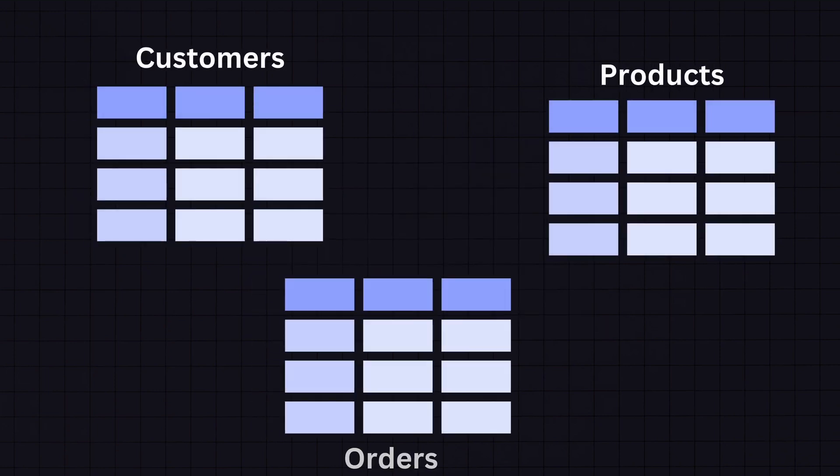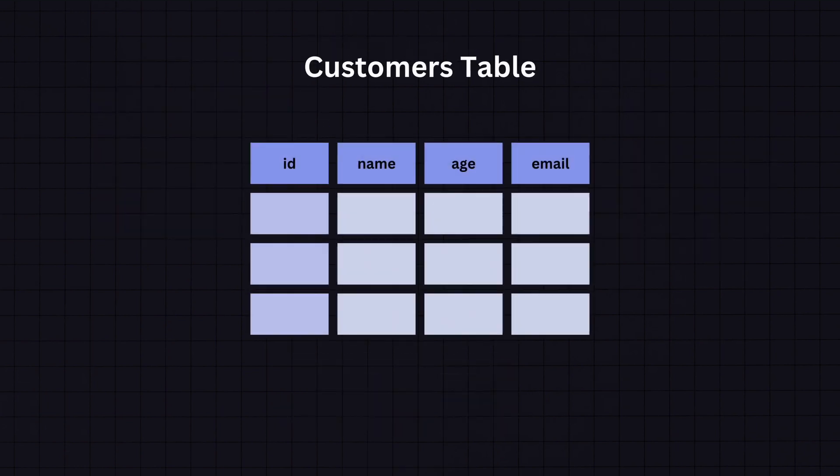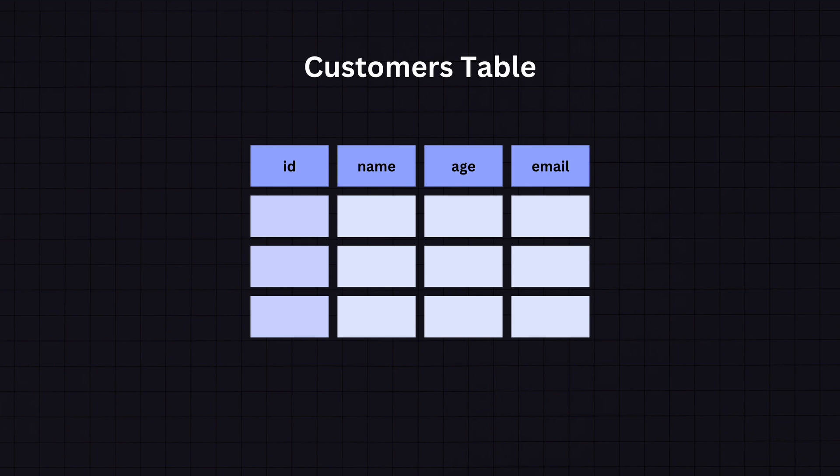Tables are the fundamental building blocks of SQL databases. Similar to a spreadsheet, each table holds data about a specific topic such as customers, orders, or products. For example, a customers table might have columns for customer ID, name, age, email, and so on.